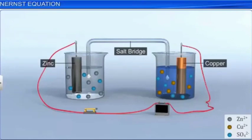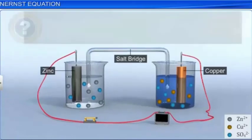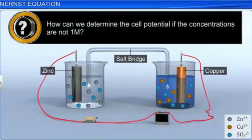Standard electrode potentials are determined at 1M concentrations. However, cell potentials are concentration dependent. How can we determine the cell potential if the concentrations are not 1M?